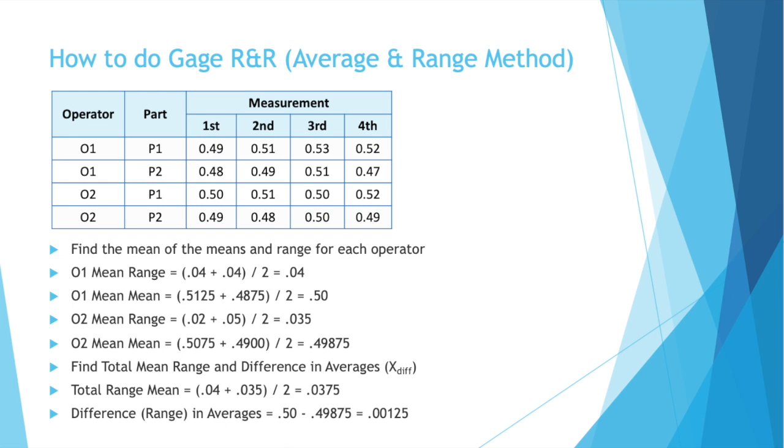So we have the range between our two averages, and then we have the average of our two average ranges. It's a bit flip-flopped, I know, but we need them for the equations.